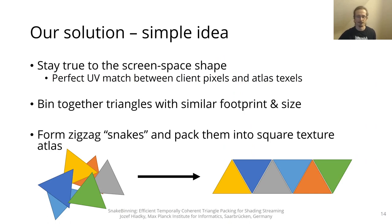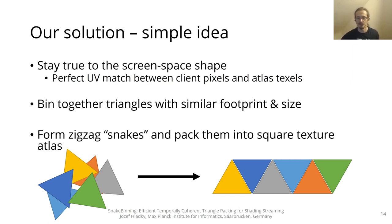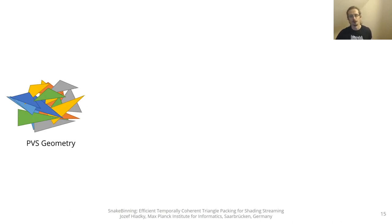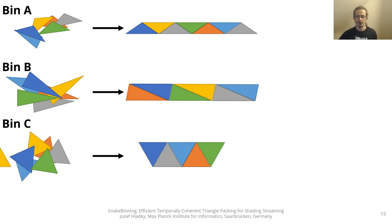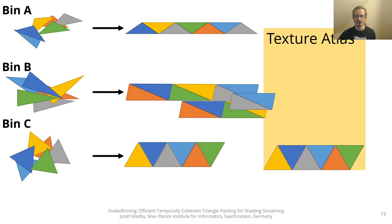Our idea is rather simple. In order to achieve perfect UV derivatives, we store the triangles in the atlas at their projected screen space shape. Then efficient packing becomes a challenge. We bin together triangles of similar shapes to form triangle snakes with zigzag patterns, which can be packed efficiently into a square texture. We first take our PVS geometry, group the triangles into bins according to their screen space shape, then organize the bin triangles into snake shapes, which are finally arranged into the atlas texture.